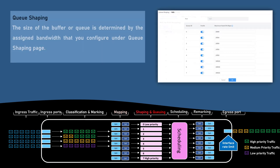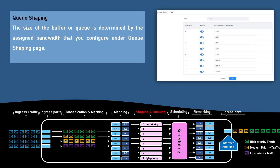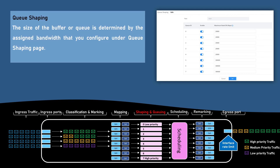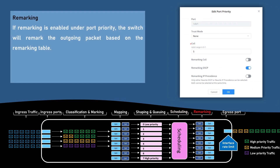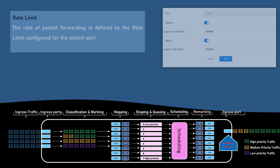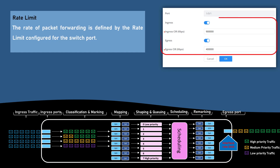The size of the buffer or queue is determined by the assigned bandwidth configured under the queue shaping page. After the packets are placed in their associated queues, scheduling will service them based on the queuing algorithm used by the switch port. If remarking is enabled under port priority, the switch will remark the outgoing packet based on the remarking table. The rate of forwarding of packets is defined by the rate limit configured for the switch port.